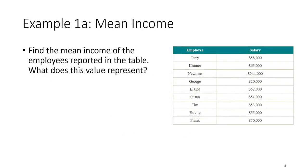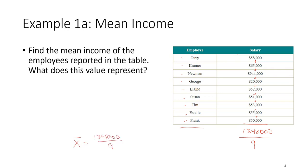Let's find the mean income of all the employees reported in this table. We want to add up all of the values in the table and then divide by the number of employees — there are nine. If we add all these values up we get 1,348,000. To find the average we divide by nine, giving us a mean of $149,777.78.